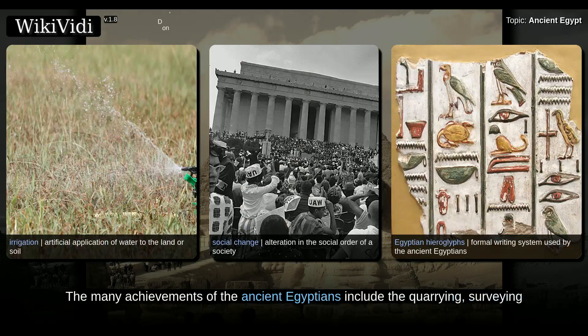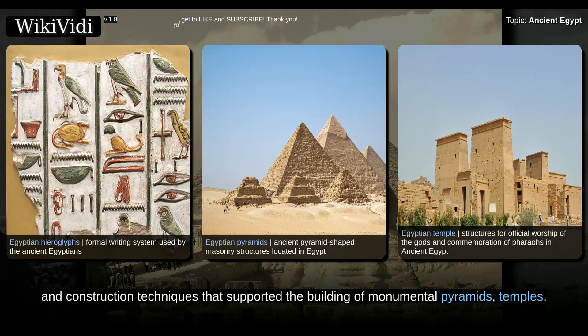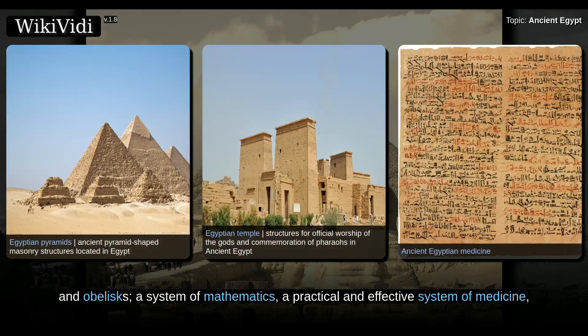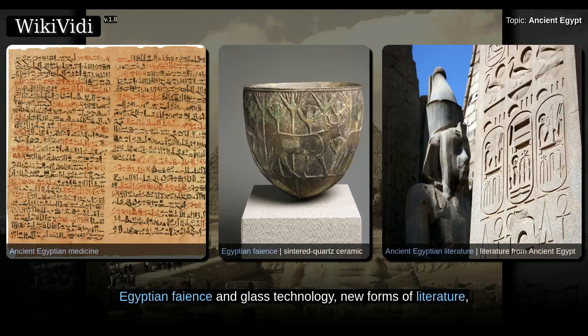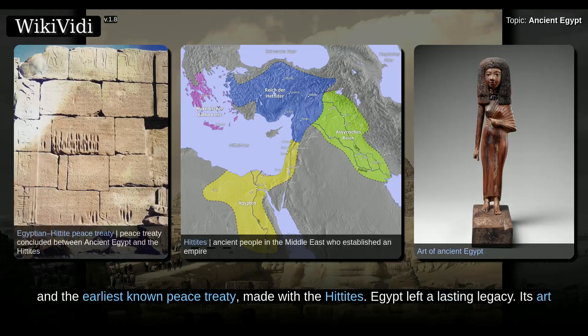The many achievements of the ancient Egyptians include the quarrying, surveying, and construction techniques that supported the building of monumental pyramids, temples, and obelisks, a system of mathematics, a practical and effective system of medicine, irrigation systems and agricultural production techniques, the first known planked boats, Egyptian faience and glass technology, new forms of literature, and the earliest known peace treaty, made with the Hittites.